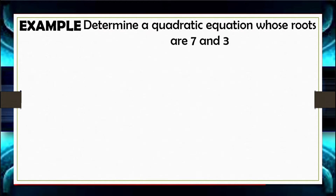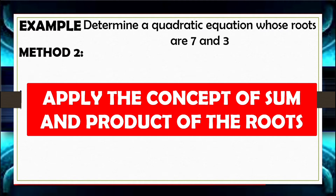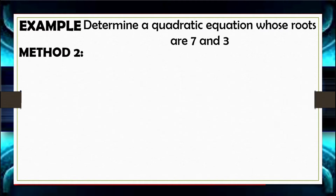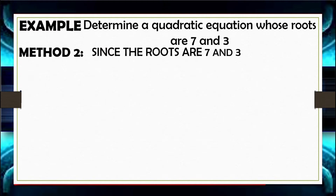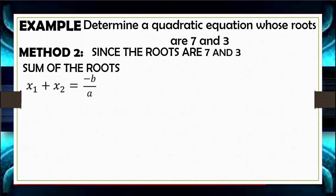Another method to determine a quadratic equation whose roots are given is the application of the concept of sum and product of the roots. The roots given are 7 and 3. Applying the sum of the roots, we use the expression negative B over A. Adding 7 and 3, the sum is 10.